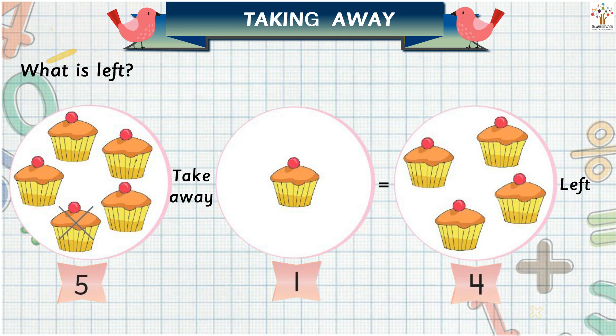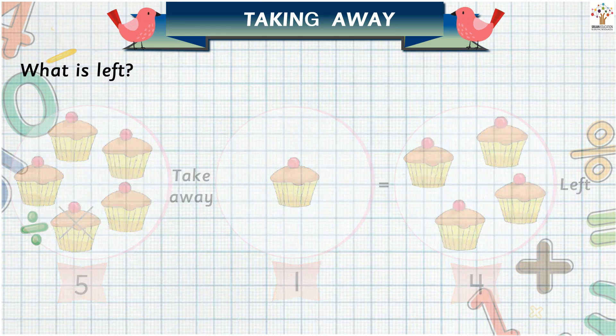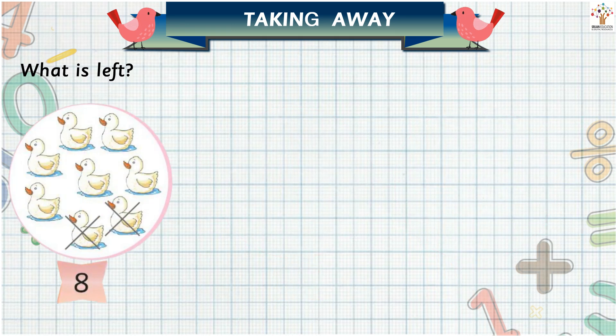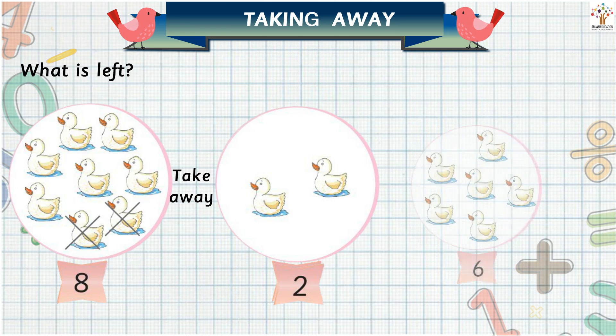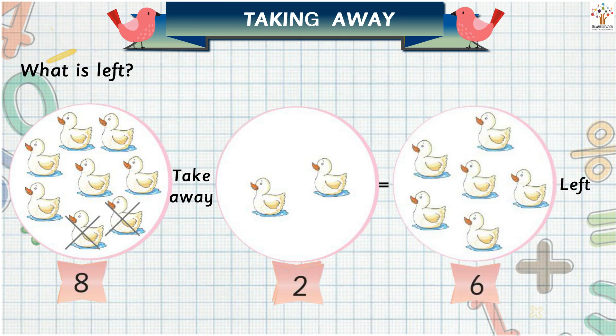There are eight ducks, then we take away two ducks. Now how many ducks are left? Eight minus two is equal to six, so there are six ducks left.